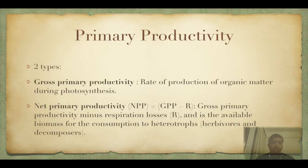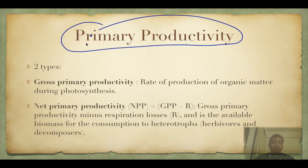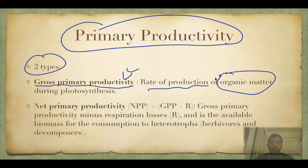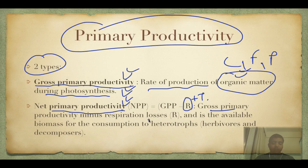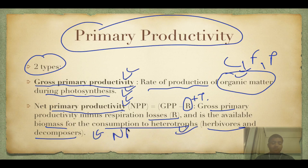Primary productivity is of two types. Gross primary productivity (GPP) is the rate of production of organic matter — carbohydrates, fats, and proteins — during photosynthesis. From GPP, if you subtract respiratory losses and temperature losses, you get net primary productivity (NPP), which is actually available for use by higher trophic levels. So: GPP minus respiratory losses equals NPP, which is available for consumption by heterotrophs such as herbivores and decomposers.